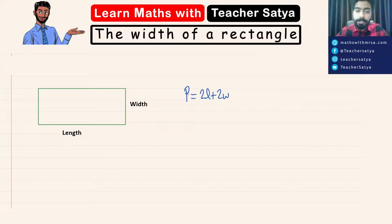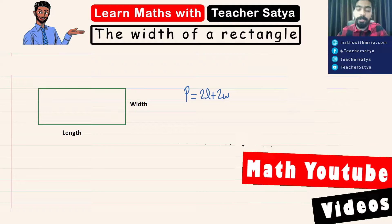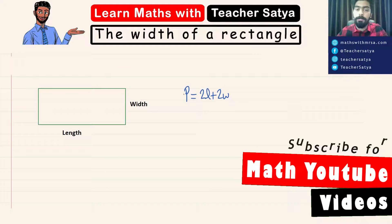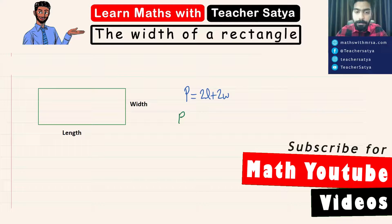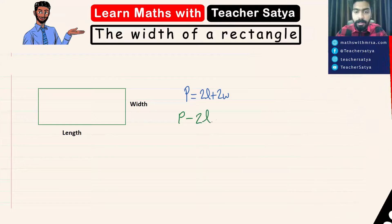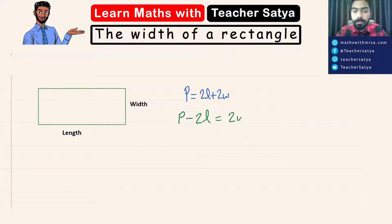Now, in this question, we know that P is equal to 2L plus 2W. Let us solve for width. First I'm going to transpose this 2L to the other side. So P minus 2L is equal to 2W.